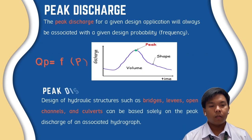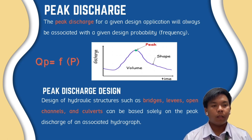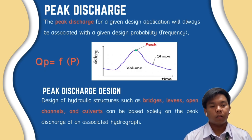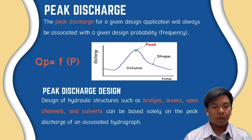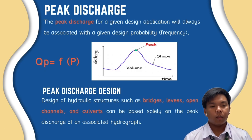The peak discharge for a given design application is always associated with a given design probability, otherwise known as frequency. It is expressed as Q-sub-p equals f multiplied by p. On the discharge hydrograph, discharge is on the y-axis and time is on the x-axis. The design of hydraulic structures such as bridges, levees, open channels, and culverts can be based solely on the peak discharge of an associated hydrograph.